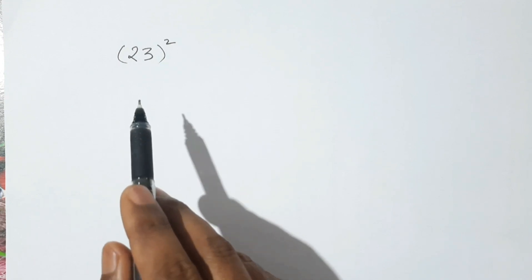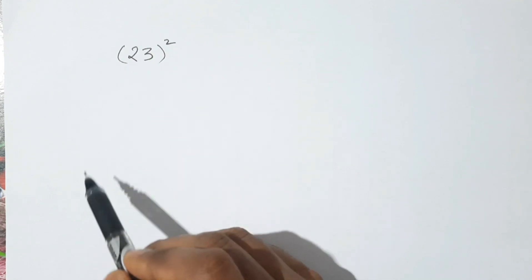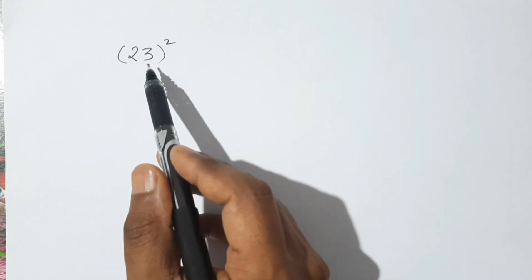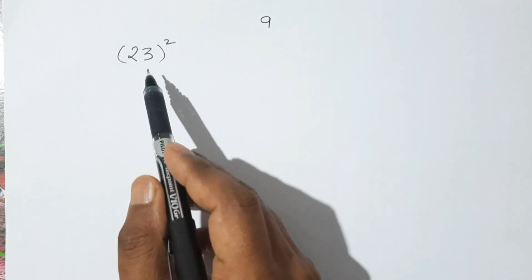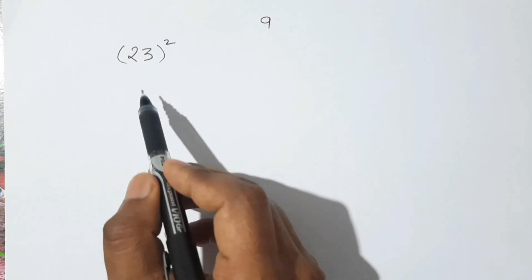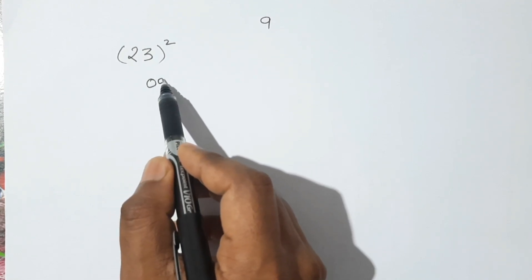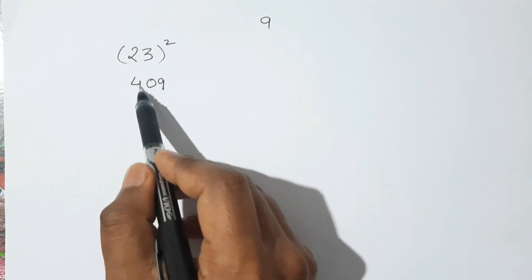We are going to find the square of 23 using our short method. We will do it in two steps. First step: we will find the square of each digit separately. Three square is nine — but whenever we write the square of this number we have to write it in two-digit form, so three square is nine and we write zero nine.